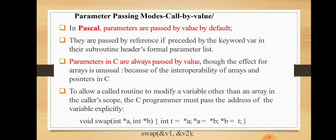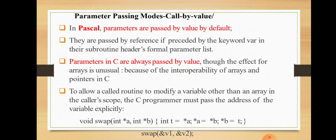First, we look at which languages are using the call by value method. In Pascal, parameters are passed by value by default. The default parameter passing mechanism in Pascal is pass by value. It can also use pass by reference, but the default is pass by value. Parameters are passed by reference if they are preceded by the keyword 'var' in their subroutine header formal parameter list.